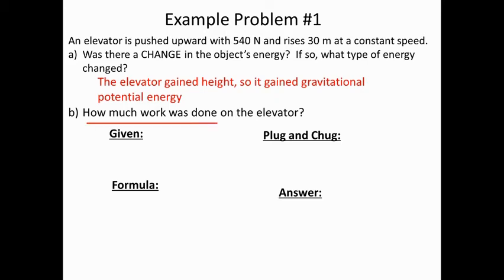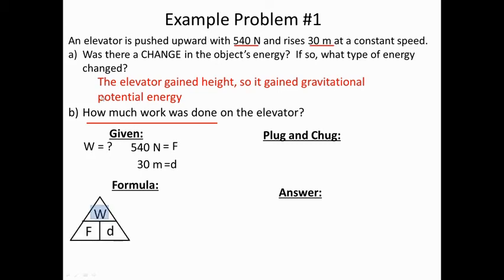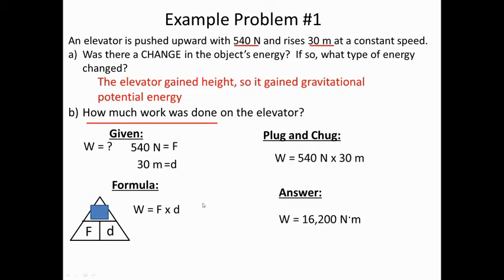How much work is being done on the elevator? We know we have 540 newtons of force and 30 meters of distance. We're looking for work, so we cover it up in the formula triangle — force and distance are next to each other, so we multiply. Plugging in 540 for force and 30 for distance, when you multiply those two numbers together you get 16,200 newton meters of work. Since a newton meter is the same as a joule, you can also write the answer as 16,200 joules.